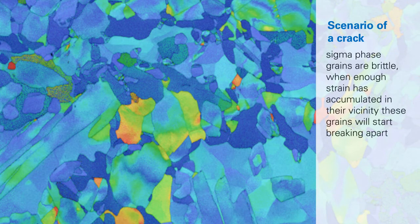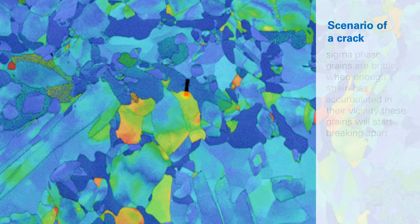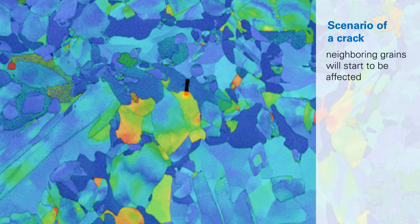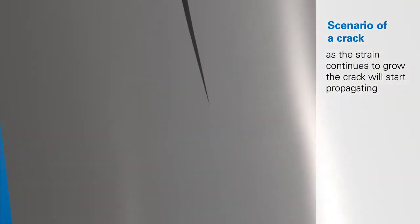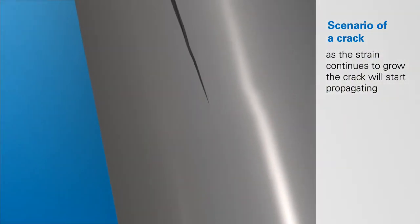The sigma phase grains are brittle. When enough strain has accumulated in their vicinity, these grains will then start breaking apart. And also neighboring grains will start to be affected. As the strain continues to grow, the crack will start propagating.